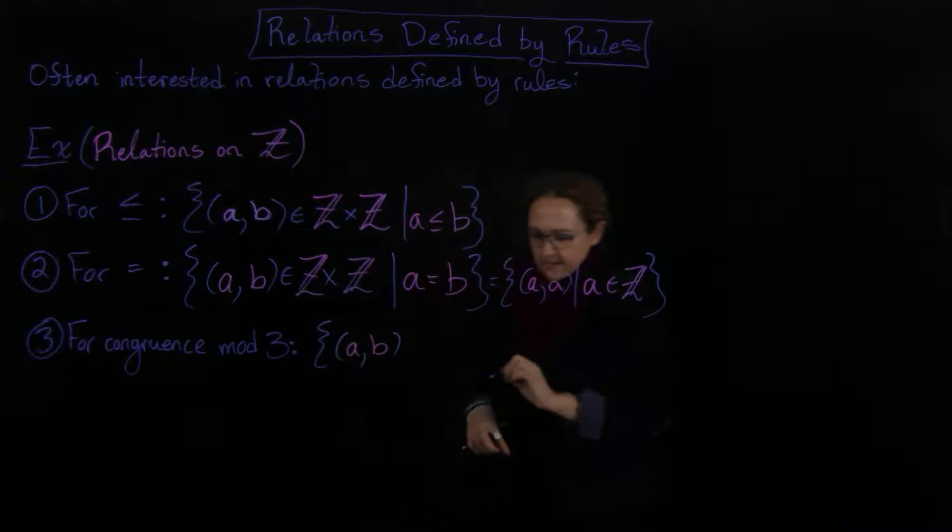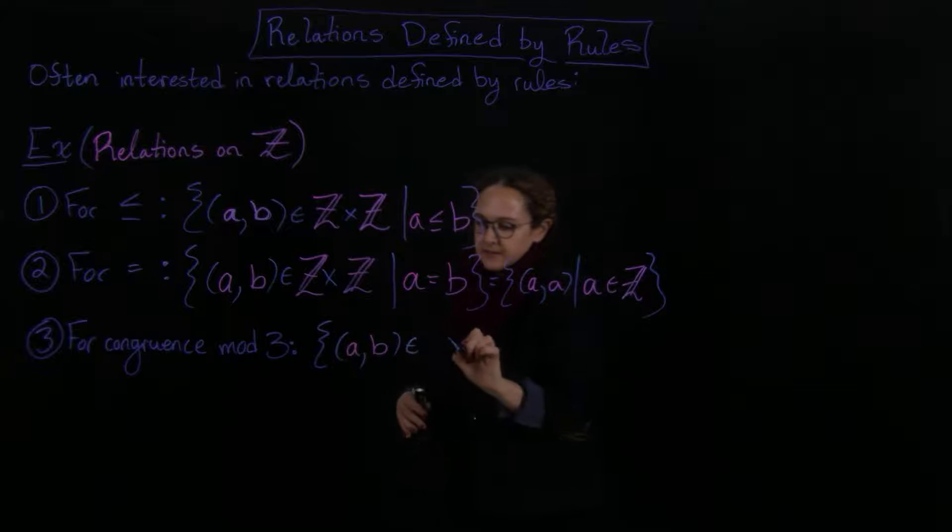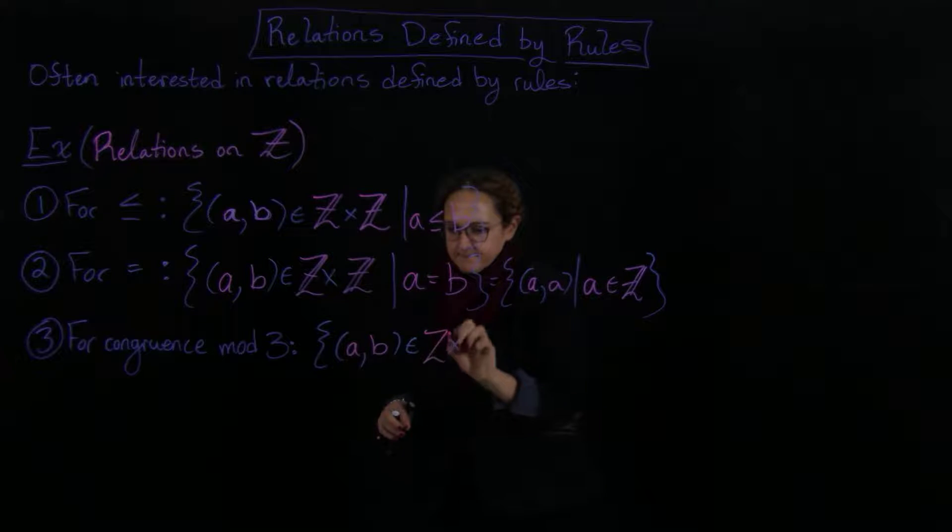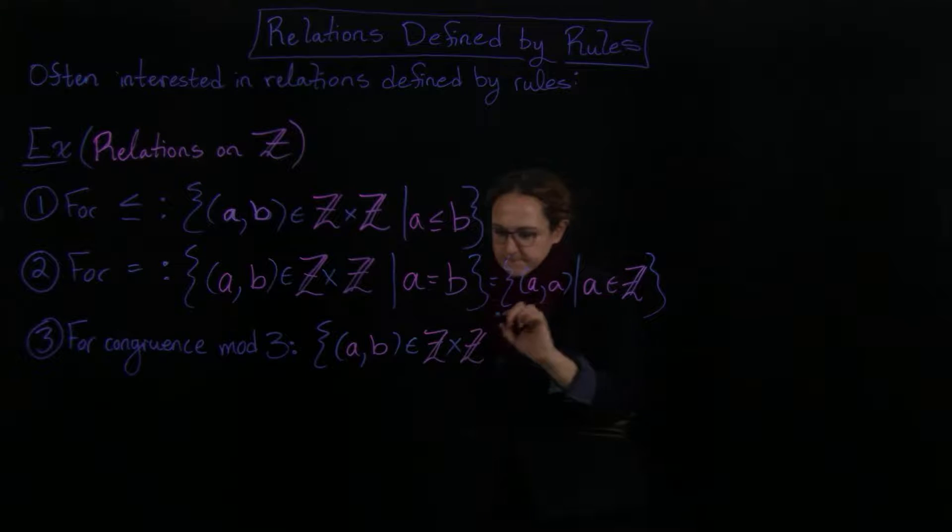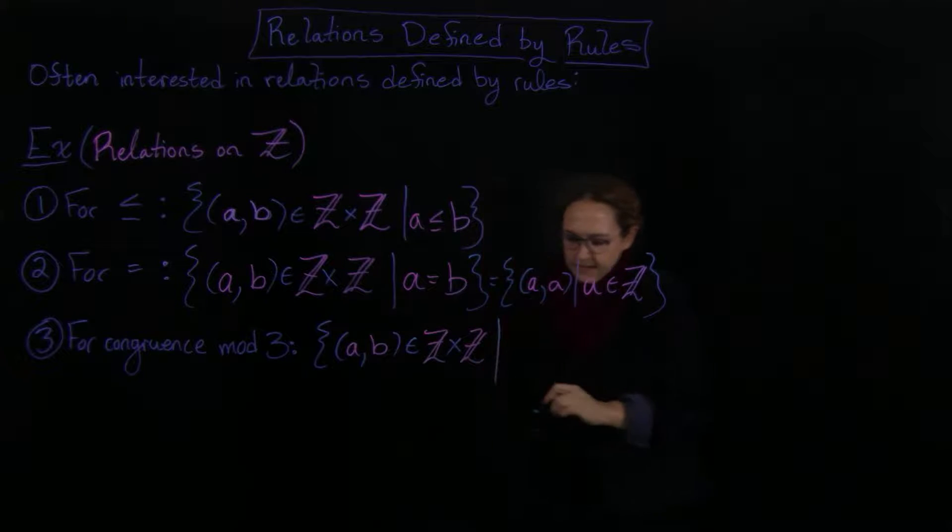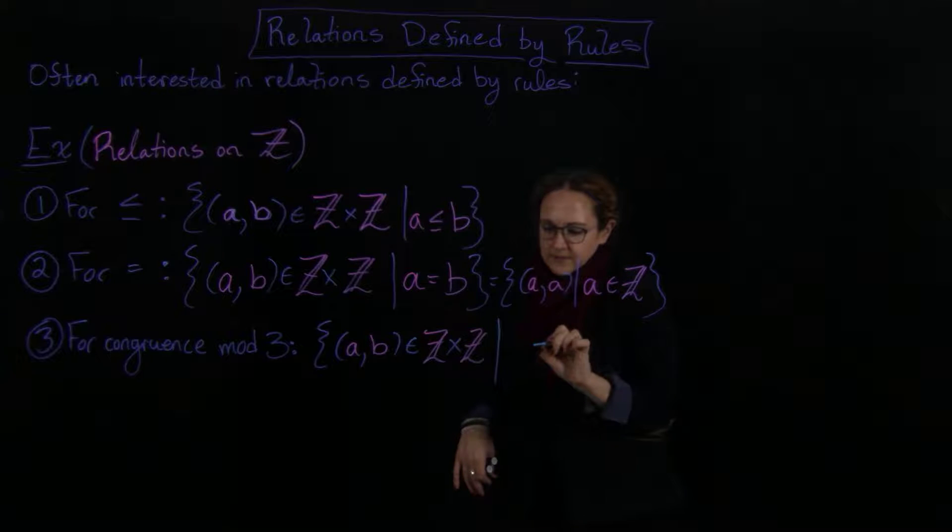Such that, oh sorry, the set of all A, B in the integers cross the integers. Such that, and then we have A is congruent to B mod 3.